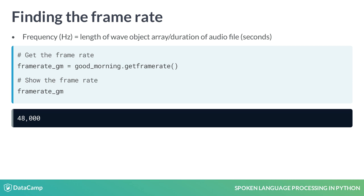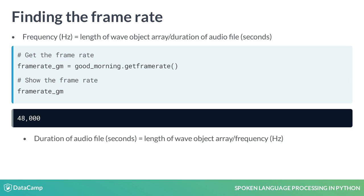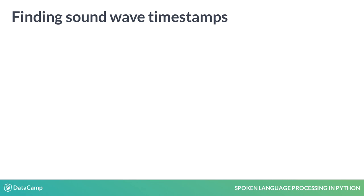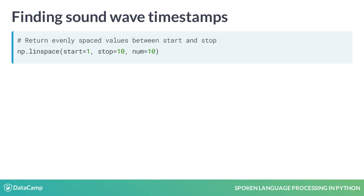We can use this frame rate variable for one more thing, which will be handy for visualizing our SoundWaves later. By dividing the number of items in the SoundWave array by the frame rate, we can get the duration of our audio file. With this value, we can leverage NumPy's LinSpace method to figure out the timestamp where each SoundWave value occurs. The LinSpace method takes start, stop, and num integers as parameters. Calling it will return num evenly spaced values between start and stop.